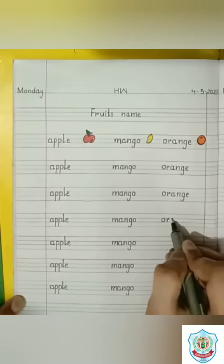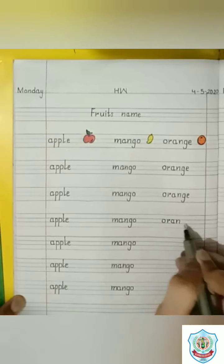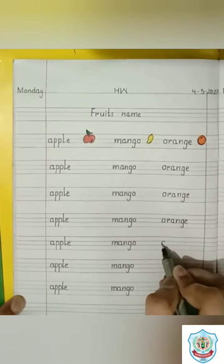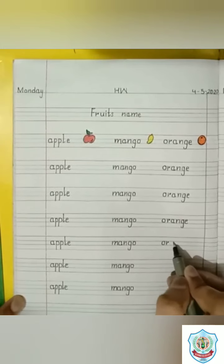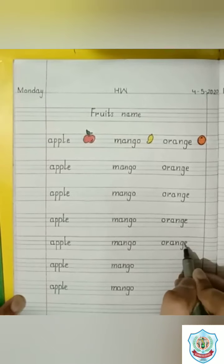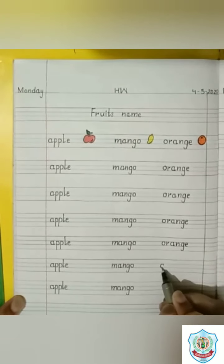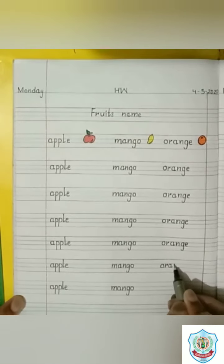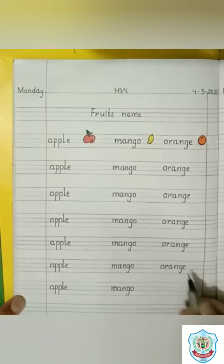O, R, A, N, G, E. Orange. O, R, A, N, G. Orange. Orange. O, R, A, N, G, E. Orange.